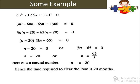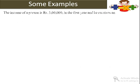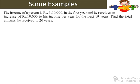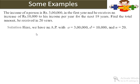उसे अपना loan repay करने के लिए 20 months का time period लगेगा. Next question: The income of a person is 3 lakh rupees in the first year, and he receives an increase of 10,000 rupees per year for the next 19 years. Find the total amount he receives in 20 years. Here A equals 3 lakh, D equals 10,000, N equals 20, and we have to find S20.